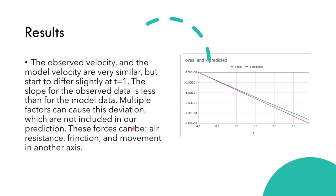In the results, the observed velocity and the model velocity are very similar but start to differ slightly at t equals 1. The slope for the observed data is less than for the model data. Multiple factors cause this deviation which are not included in our prediction, such as air resistance, friction, and movement in the z axis.